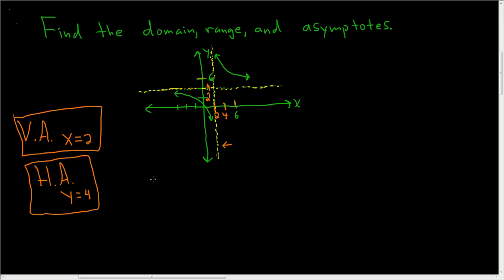Now to find the range. The range is all the possible y values. So we'll start by looking, going from bottom and then up. So negative infinity. So you go from the bottom up all the way to four. And we don't include the four because we have an asymptote. Parentheses, union, and then we start back up at four, and then all the way to infinity. So four to infinity. So that would be the range.